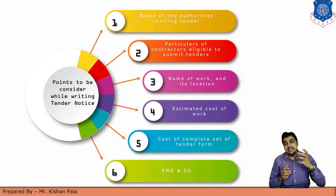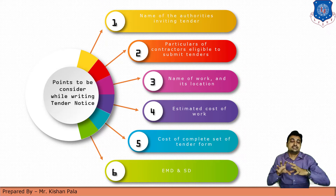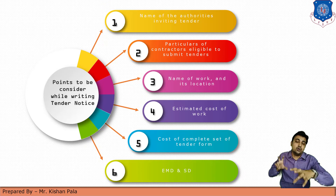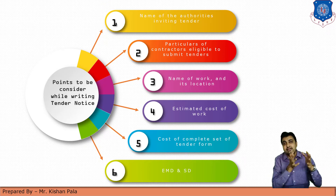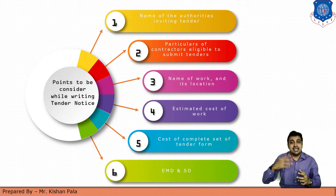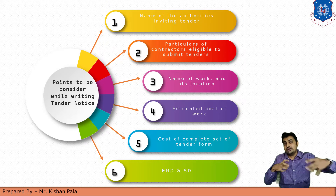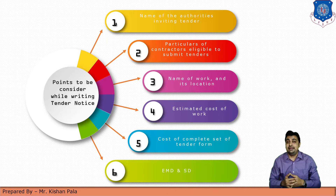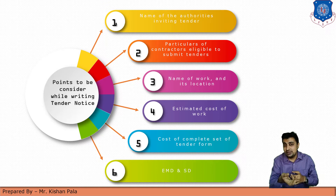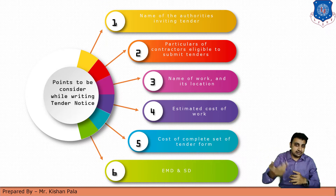Next is the estimated cost of work. The client displays the estimated total cost of the project — for example, 50 lakhs, 10 lakhs, 1 crore, or 5 crore rupees. This estimated amount is displayed by the owner, and after analyzing the quantities, the contractor will quote a particular amount from the contractor's side.